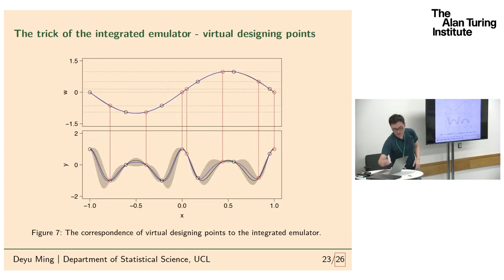If you plot the first stage model, here's the emulator which is very good—it basically overlaps the true function. Then I draw the horizontal lines and you see this true design point actually produces some virtual design points here, which just correspond to these points in the integrated emulator that create this no-variance area. So here is the trick of the integrated emulator: it creates some virtual design points. Of course, it depends on the quality of the emulator of the first stage model.